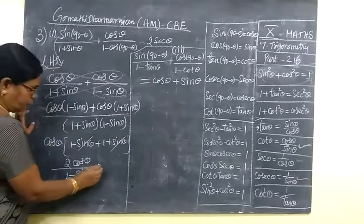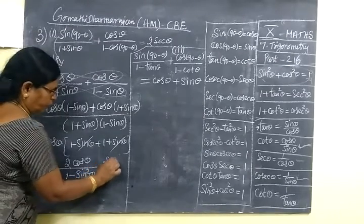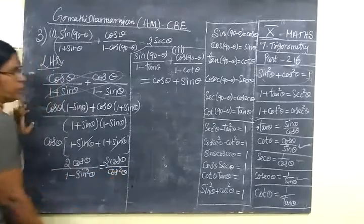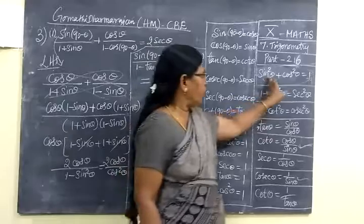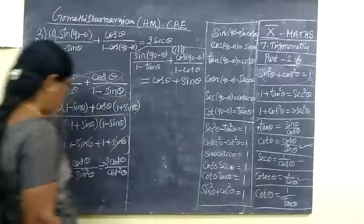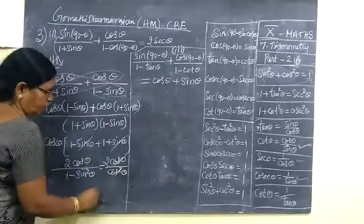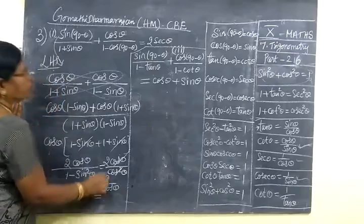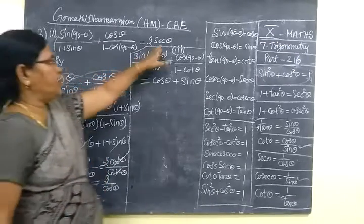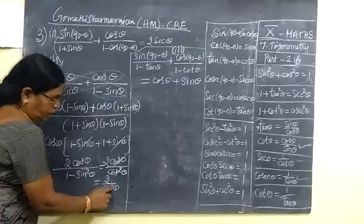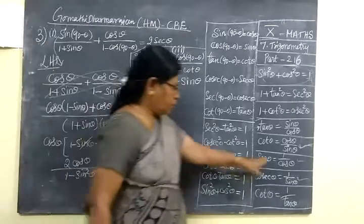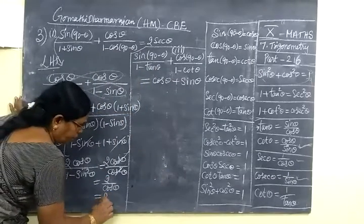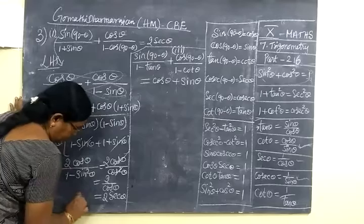So this is a minus b square. So 1 minus sin squared theta equals 2 cos theta by 1 minus sin squared theta. So 1 minus sin squared theta equals cos squared theta. So equal to 2 by cos theta, which equals 2 secant theta. You know 1 by cos theta equals secant theta, so 2 by cos theta equals 2 secant theta.